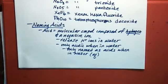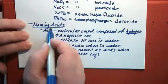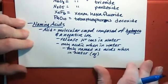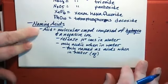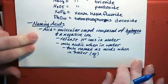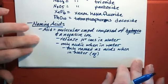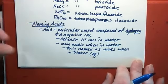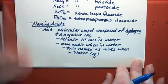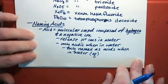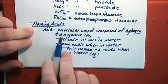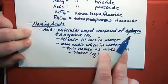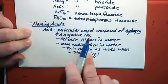For our next section, we start with naming acids. There's one more type of molecular compound that we haven't gotten to yet: acids. We'll get into the details on what acids are and how they act and their reactions later on in the second semester.